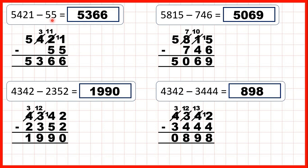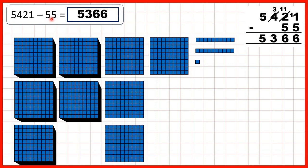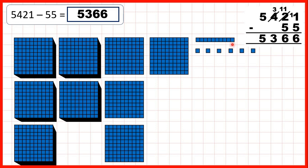Now let's take a closer look at these questions so we can see why the method works. Why, if we get a digit that's larger underneath, do we go to the left, 1 less, 1 in front? For the first question, we started with 5,421. We needed to subtract 5 ones. We can take away 1, then exchange, then take away the rest. So we've only got one 10, that's why we crossed out the two 10s and wrote 1, and we've got 6 ones in our answer.